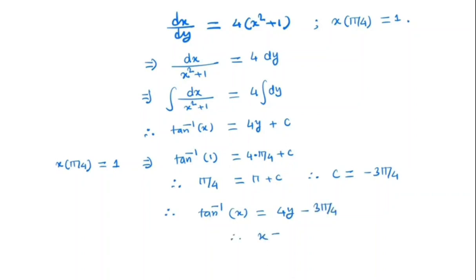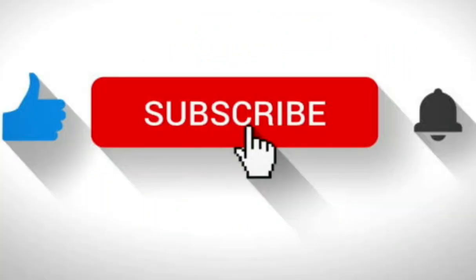So x will be tan of 4y minus 3 pi by 4. Thank you.